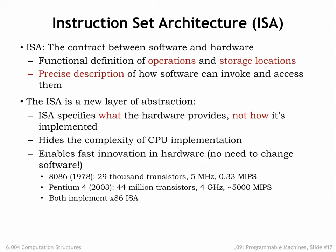The ISA is a new layer of abstraction. We can write programs for the system without knowing the implementation details of the hardware. As hardware technology improves, we can build faster systems without having to change the software. Over a 15-year time span, the hardware for executing the Intel x86 instruction set went from executing 300,000 instructions per second to executing 5 billion instructions per second. Same software as before — we've just taken advantage of smaller and faster MOSFETs to build more complex circuits and faster execution engines.